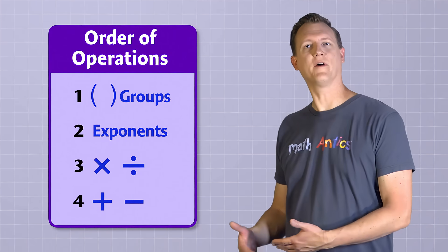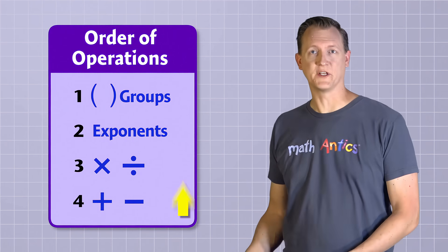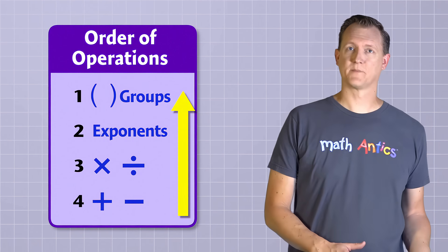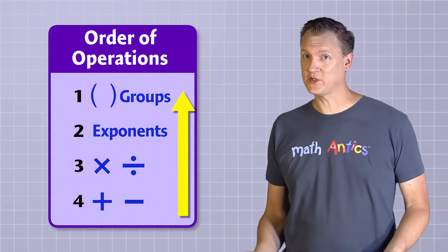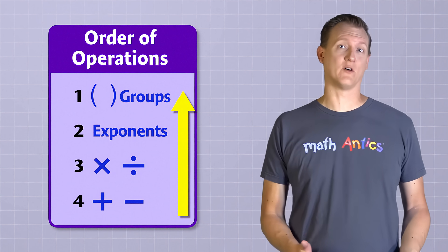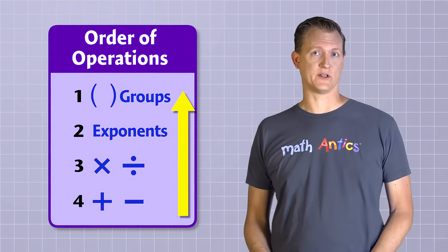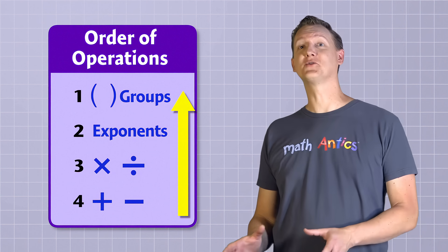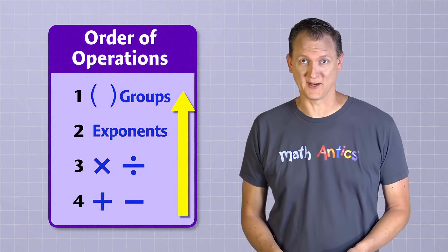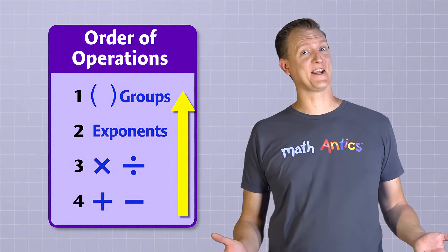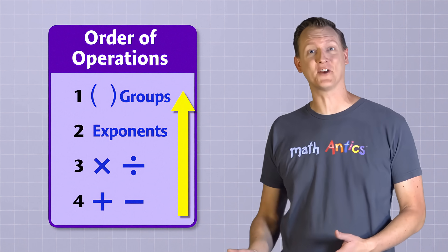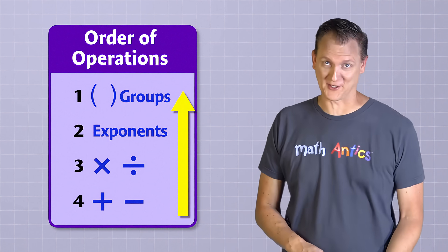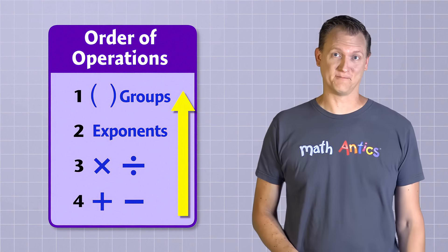So when solving equations, the best strategy is to apply those order of operations rules in reverse. Using the reverse order of operations is not the only way to solve a multi-step equation, but it's usually the easiest way — just like it's much easier to take your shoes and socks off in the reverse order that you put them on.